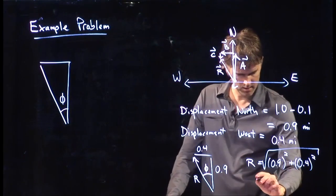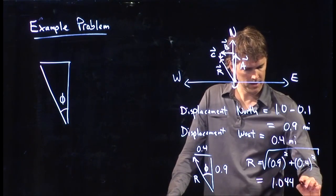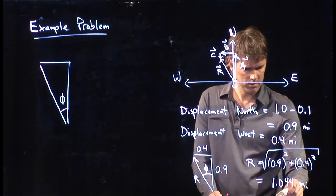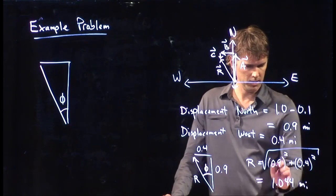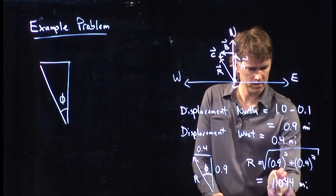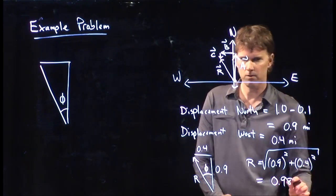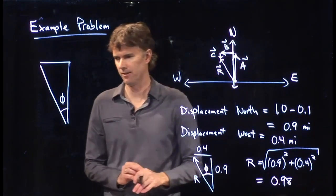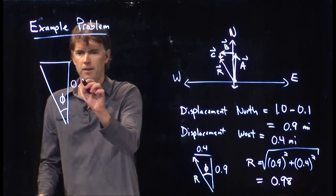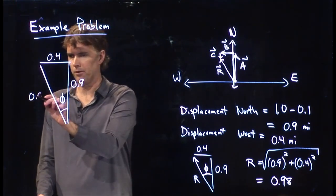What did you get for R? I got 1.044. It should be a little bigger than 0.9. The class gets 0.98. So you're a distance of 0.98 miles. Now we know all the sides of the triangle: 0.4, 0.9, and 0.98. Now we can calculate the angle phi.